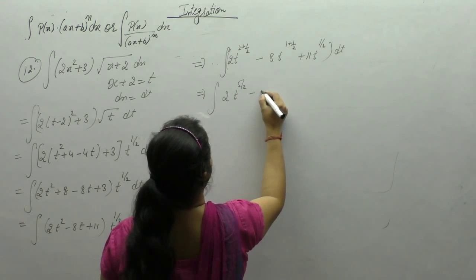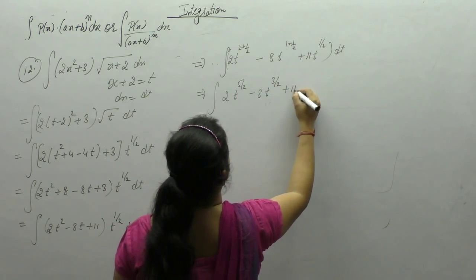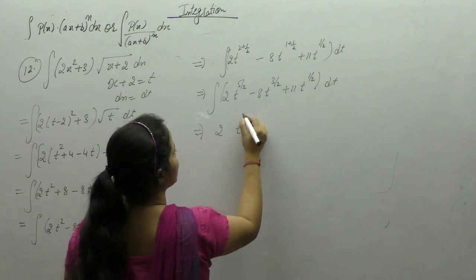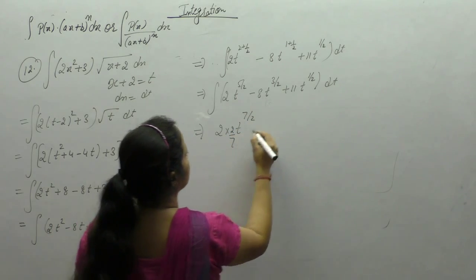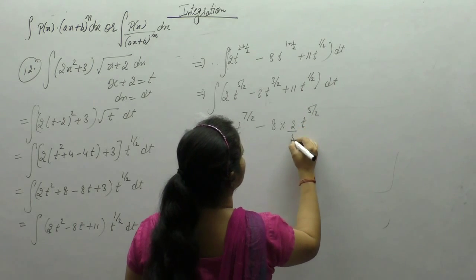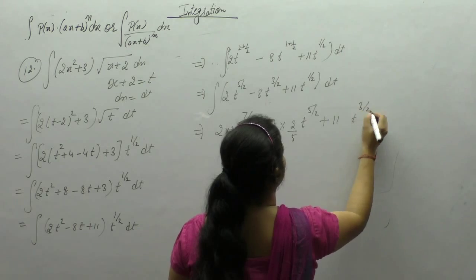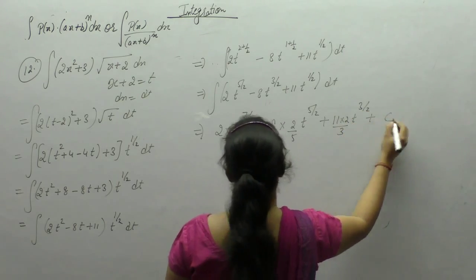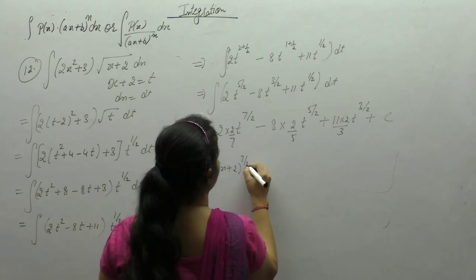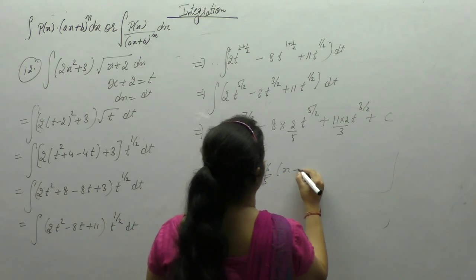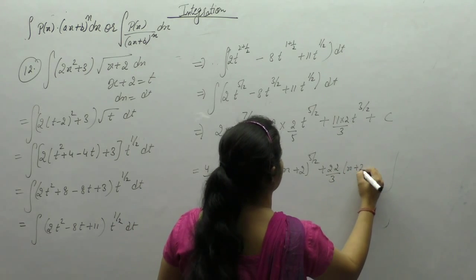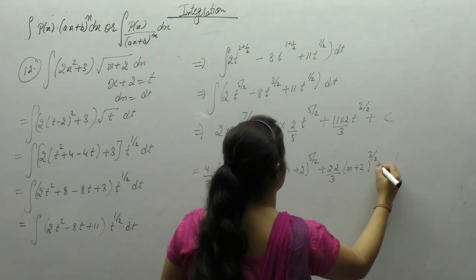We get 2t to the power 5 by 2 minus 8t to the power 3 by 2 plus 11t to the power 1 by 2. Applying the power rule: 5 by 2 plus 1 is 7 by 2, 3 by 2 plus 1 is 5 by 2, and 1 by 2 plus 1 is 3 by 2. Substituting back t as x plus 2, the answer is 4 by 7 times (x plus 2) to the 7 by 2, minus 16 by 5 times (x plus 2) to the 5 by 2, plus 22 by 3 times (x plus 2) to the 3 by 2, plus c.